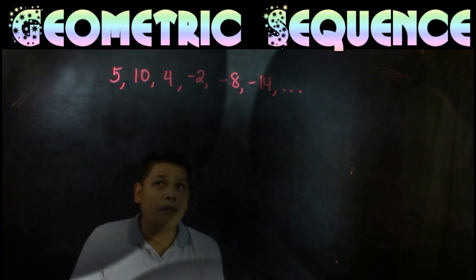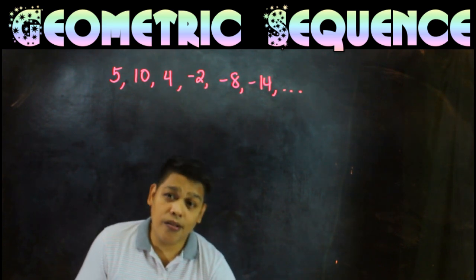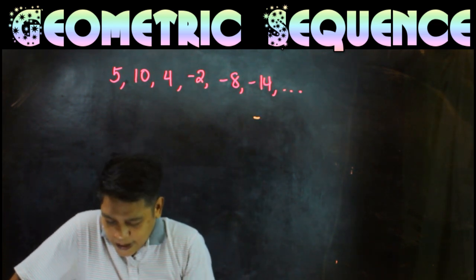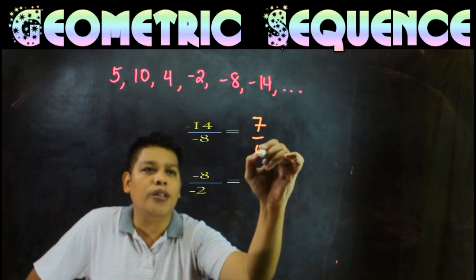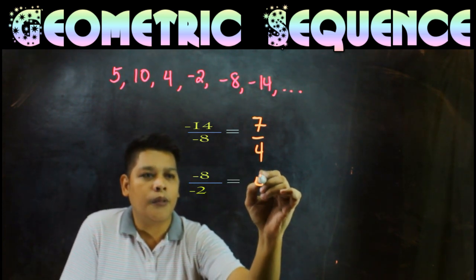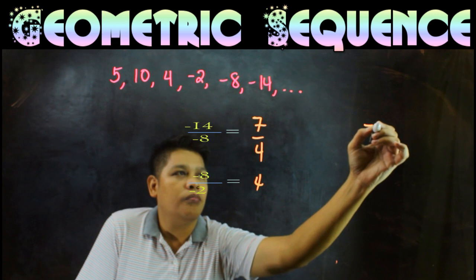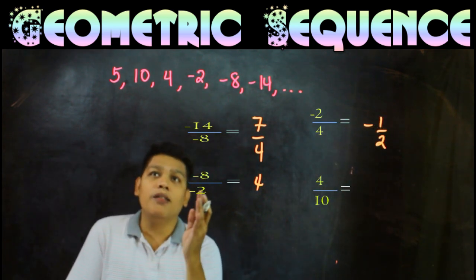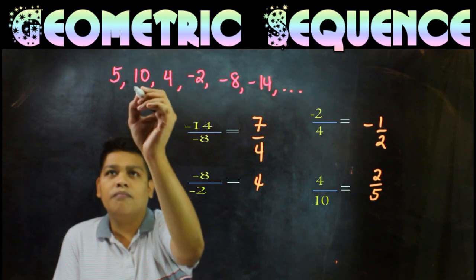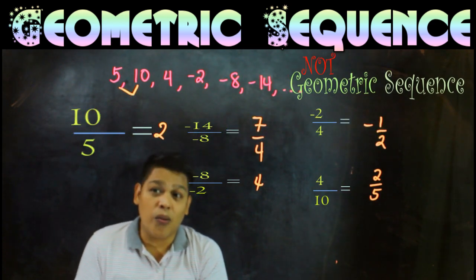Last example. 5, 10, 4, negative 2, negative 8, and negative 14. Let's do it again. Negative 14 divided by negative 8 is positive 7 over 4. Then negative 8 divided by negative 2 is positive 4. Then negative 2 divided by 4 is negative 1 half. And 4 divided by 10 is 2 over 5. And 10 divided by 5 is 2. This is not a geometric sequence. It has no common ratio.